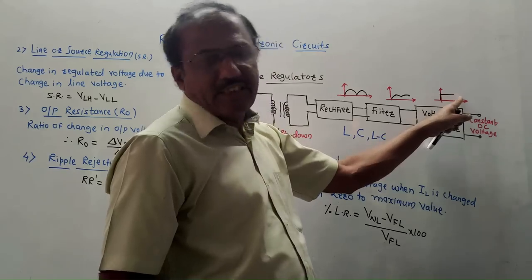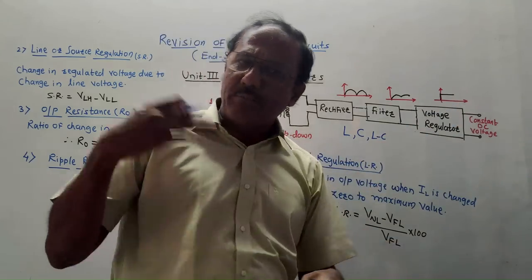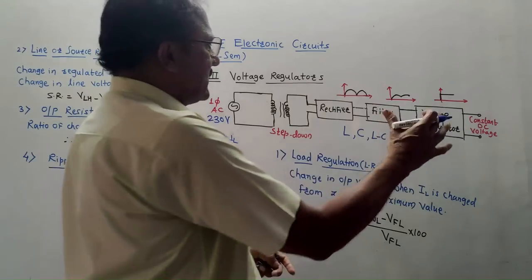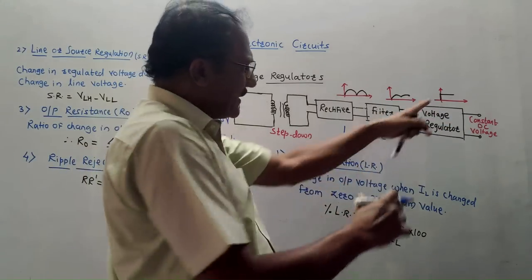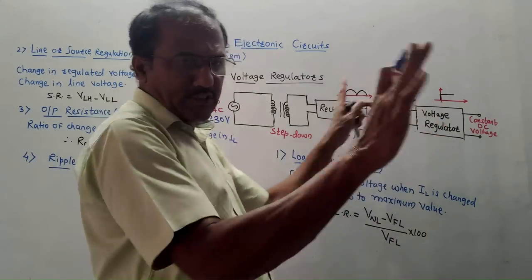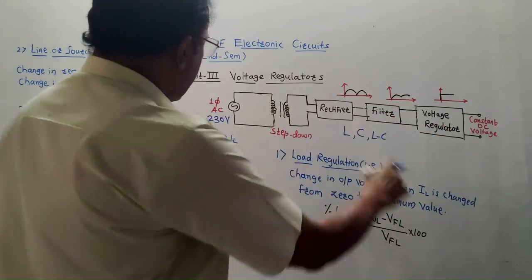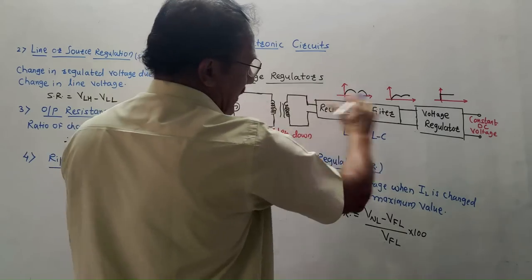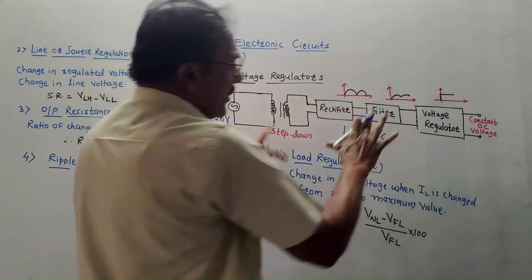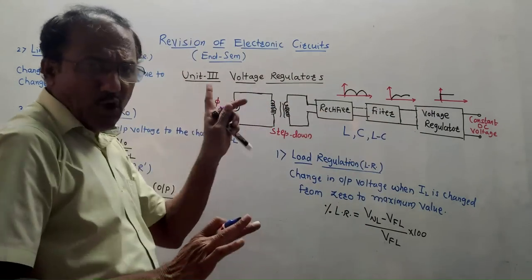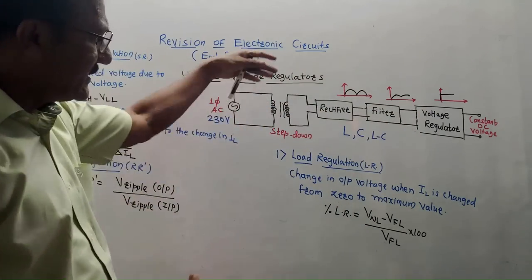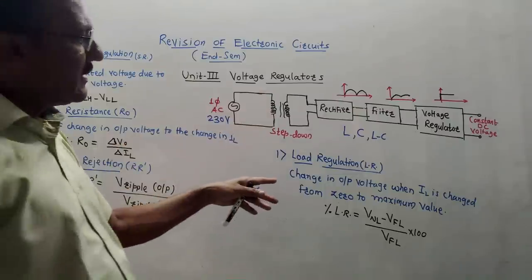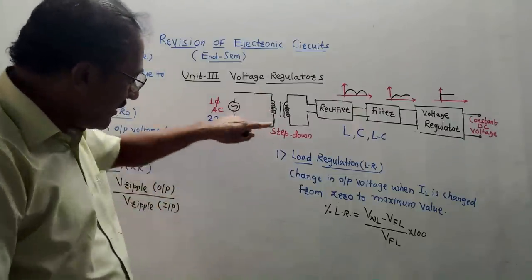The output of the voltage regulator is ideally a constant DC voltage — it remains constant — but in practical cases there are few variations in the output of the voltage regulator. This is the block diagram of the voltage regulator circuit. You should know this block diagram as well as its functioning.